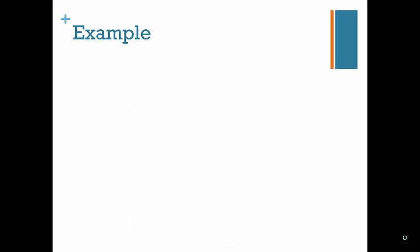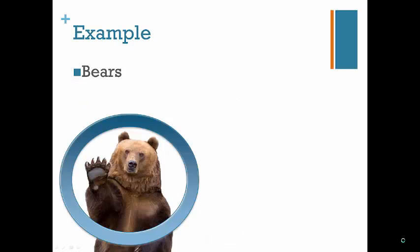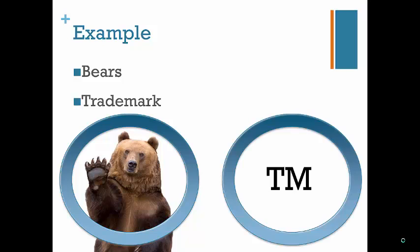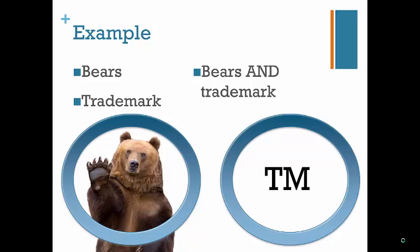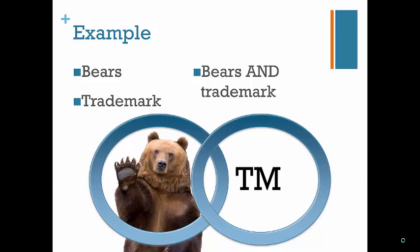As an example, a search for the word Bears and then a subsequent search for the word Trademark will give you two lists of results — one about Bears and the other about Trademark irrespective of Bears. However, a search for Bears AND Trademark is only going to return results with the words Bears and Trademark in them.